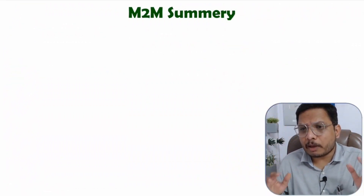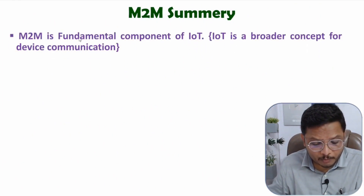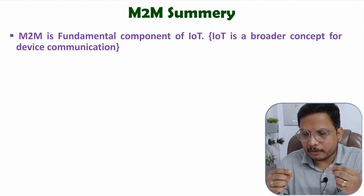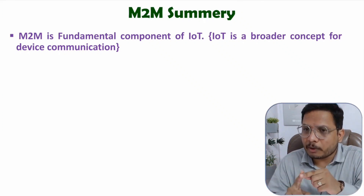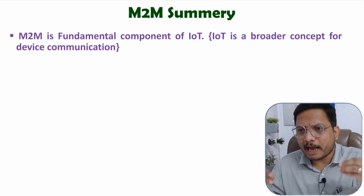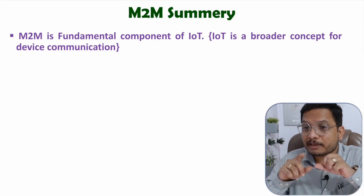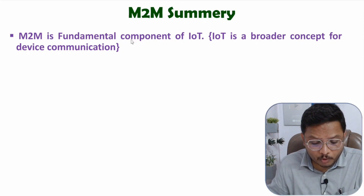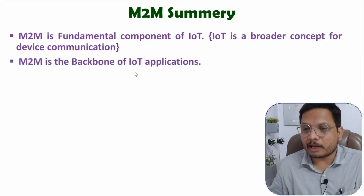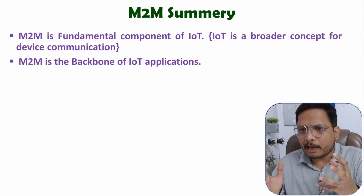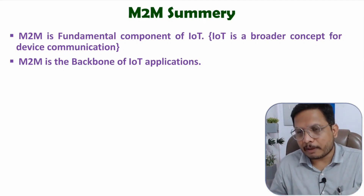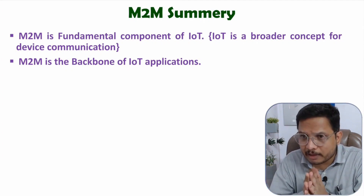To summarize: M2M networks are a fundamental concept of IoT, but IoT has a broader aspect of communication. IoT is a broader concept where many applications are integrated using the internet, whereas M2M is purpose-specific with limited applications. IoT involves many networks, devices, sensors, actuators, and a lot of data, while M2M has specific applications. M2M is the backbone of IoT — once you understand how an M2M network is formed and multiple M2M applications are combined together, that forms an IoT network. I hope this video has been beneficial. If you have any queries, please post them in the comment box. Thank you so much for watching.